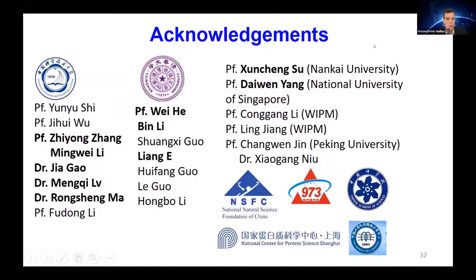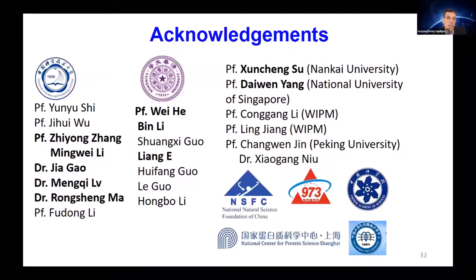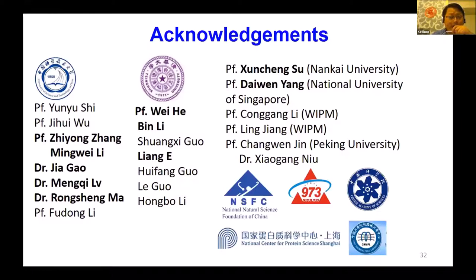Thank you for the nice presentation. If there are any questions, please type them into the Q&A box at the bottom of your screen. I have a question: did you quantify in more detail the exchange between the open and closed state of the Tudor domain — the exchange rates and the populations? The population of the minor state is about 6%, quantified from the relaxation dispersion, and the exchange rate is around 600 Hz.